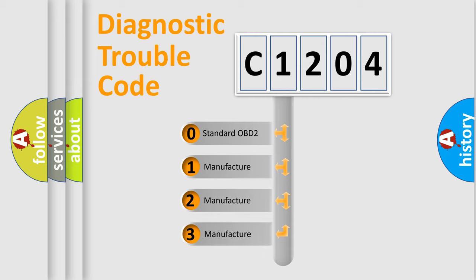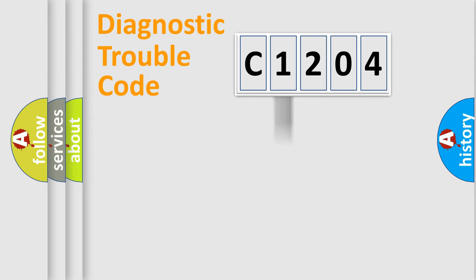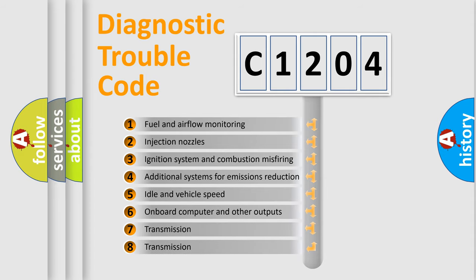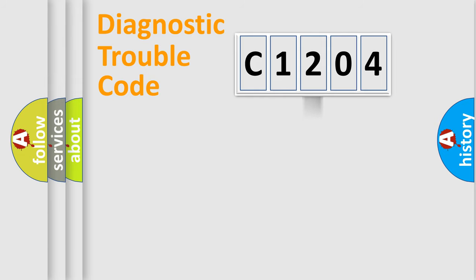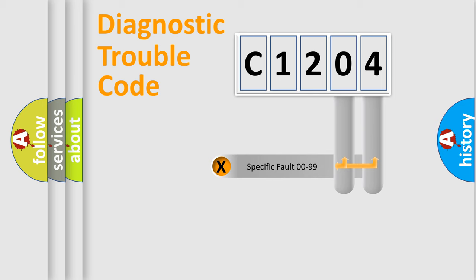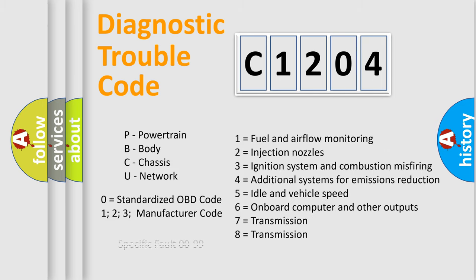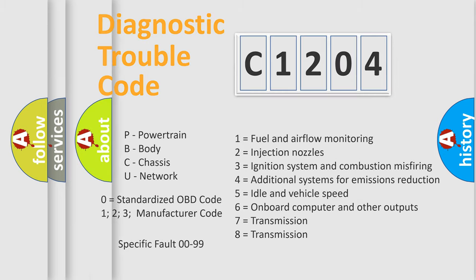If the second character is expressed as zero, it is a standardized error. In the case of numbers 1, 2, or 3, it is a manufacturer-specific error. The third character specifies a subset of errors. This distribution is valid only for the standardized DTC code. Only the last two characters define the specific fault of the group, and this division is valid only if the second character is zero.